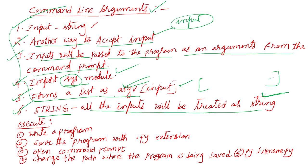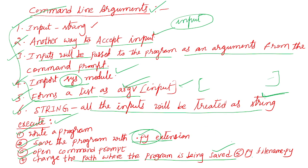Next, how to execute a command line arguments program: first, write the program by importing the sys module. Next, save the program with a .py extension. Then open the command prompt and change the path to where the program is saved. The execution syntax is: py filename.py. Now I will show you how to write and execute the program in Python IDLE.